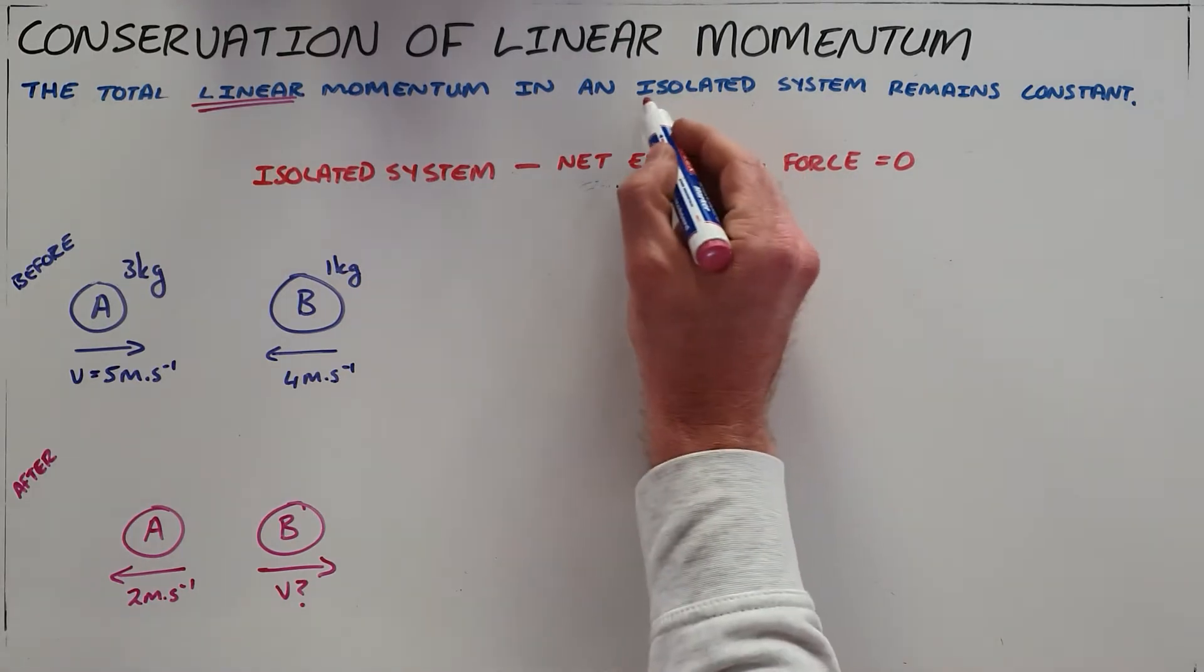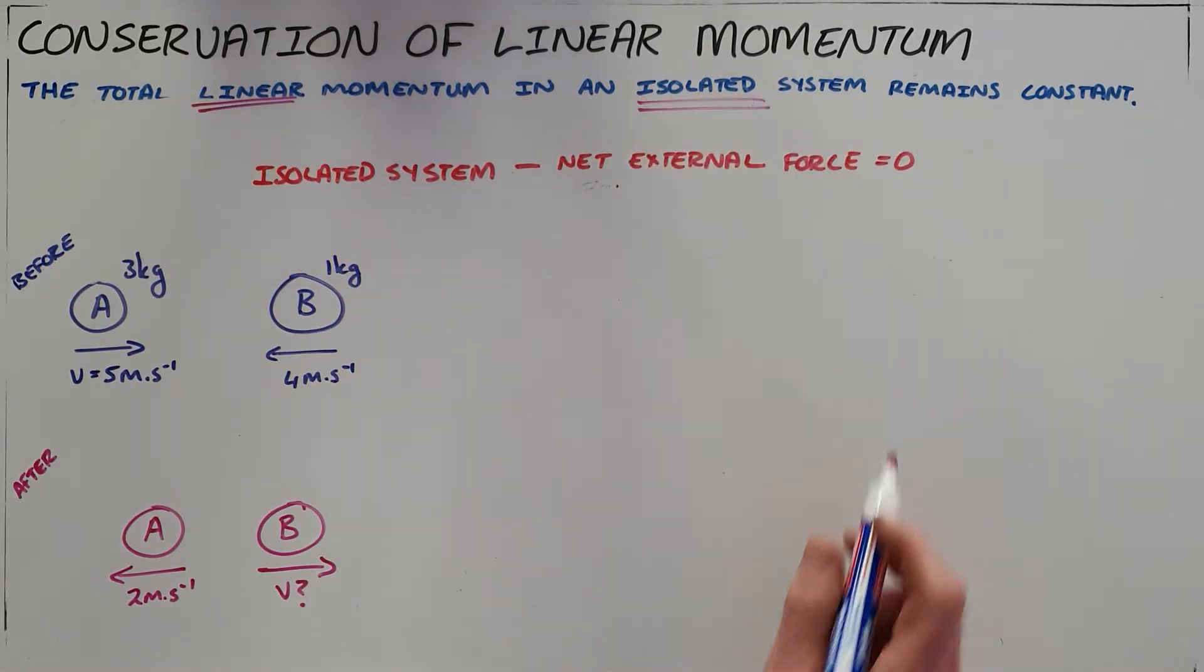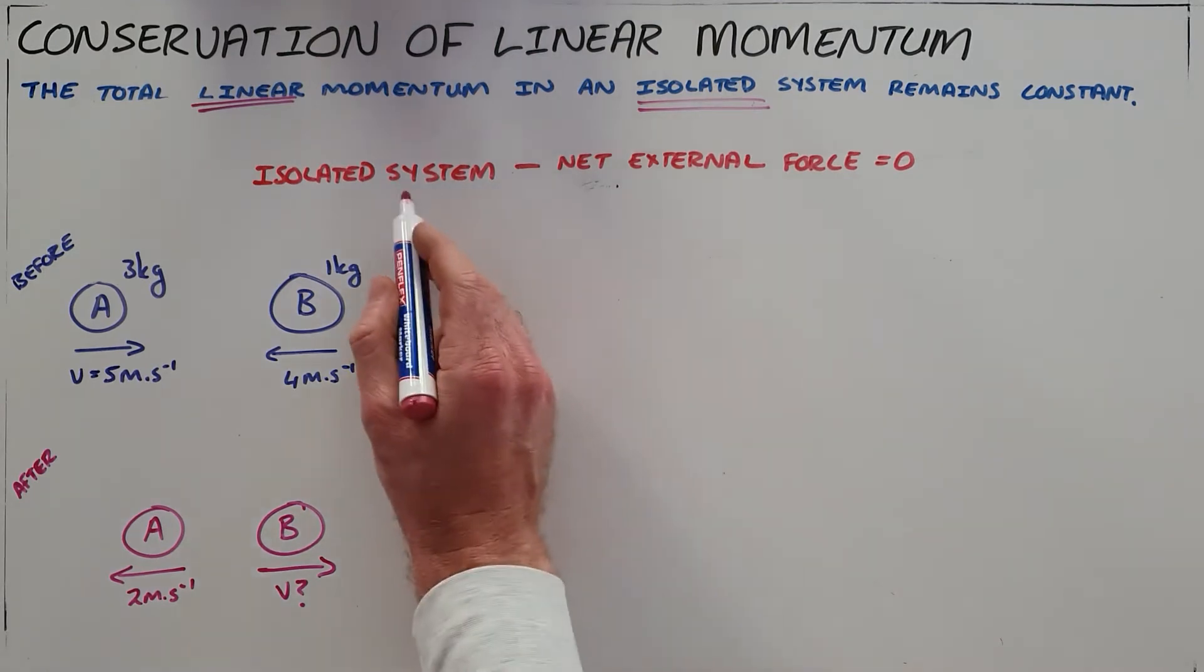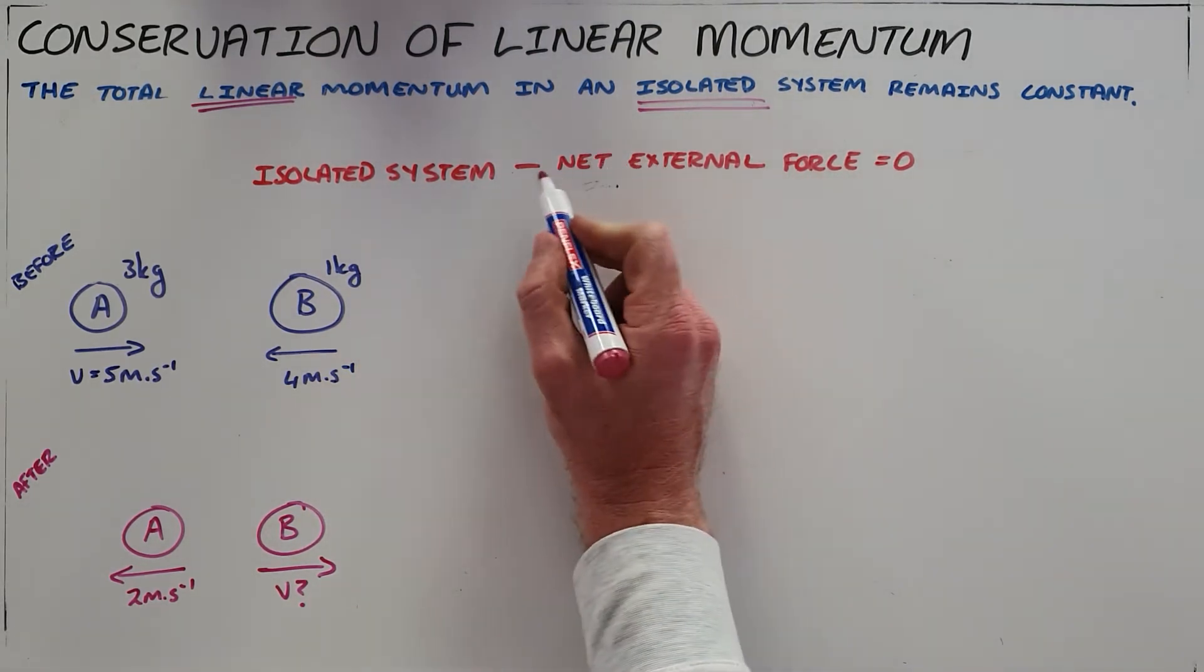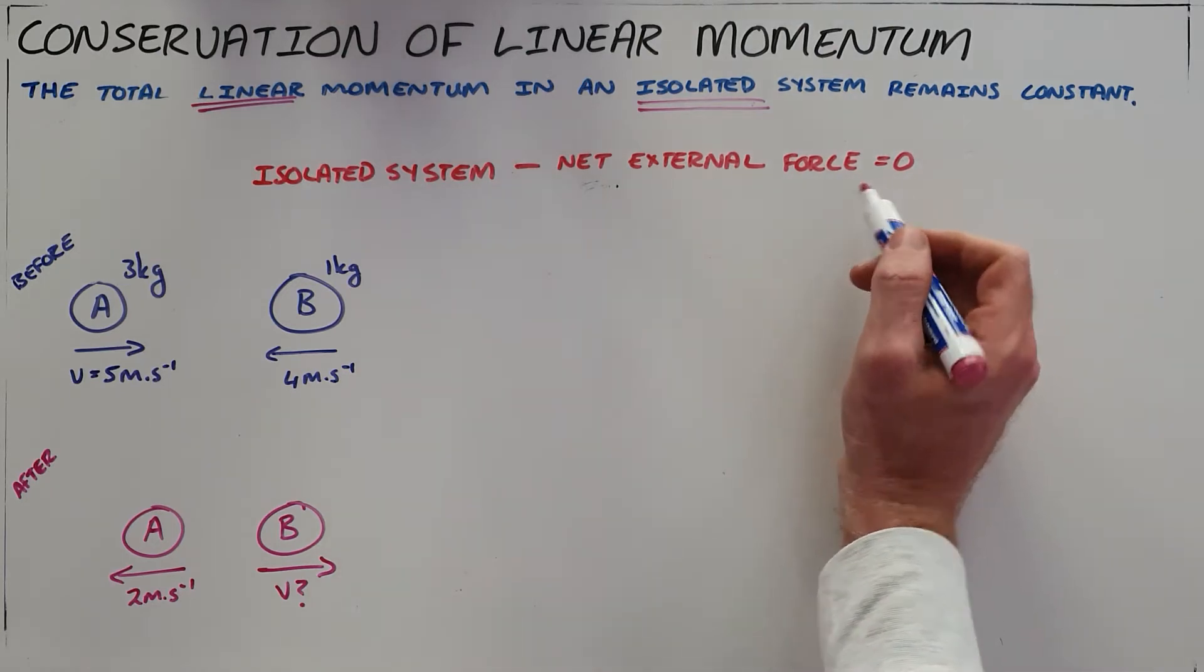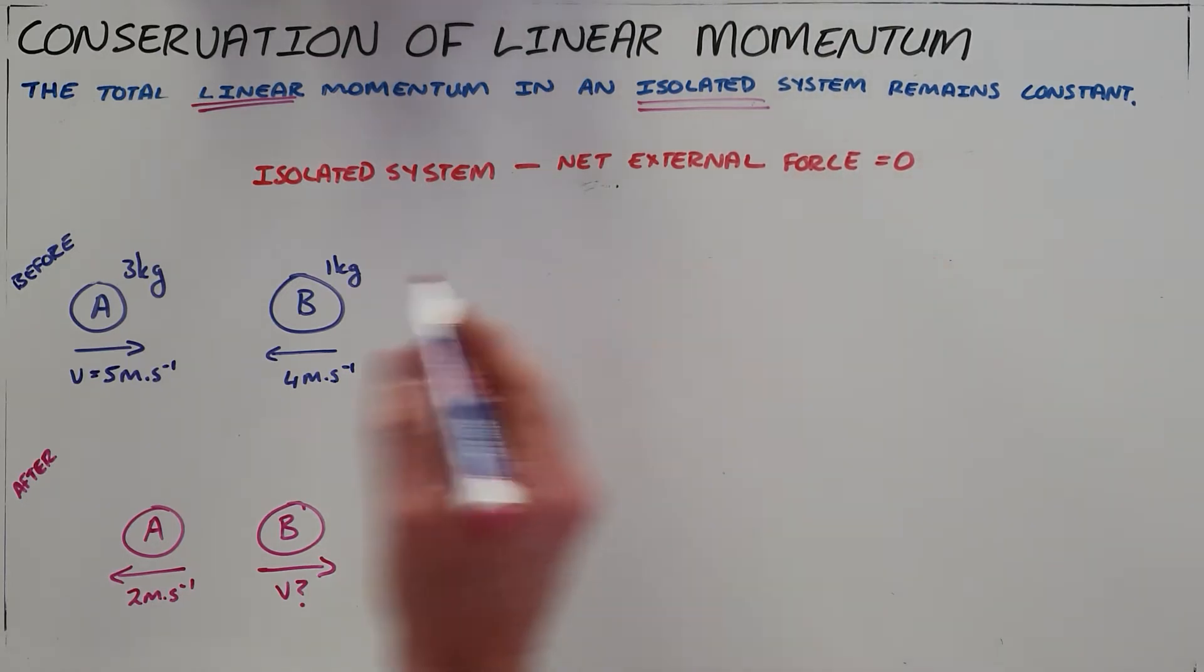Secondly, we must specify that it is an isolated system, and an isolated system is a system where the net external force is zero. Note that is not saying there are no external forces, what it says is the net external force is zero.